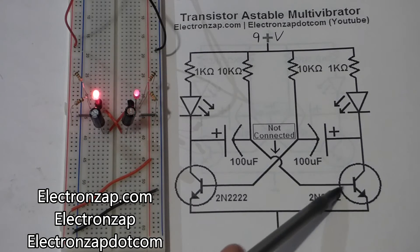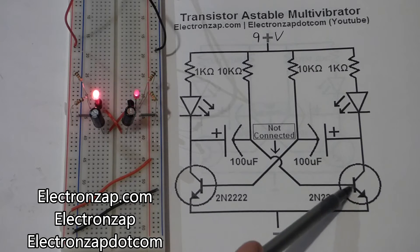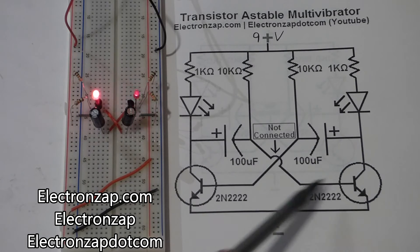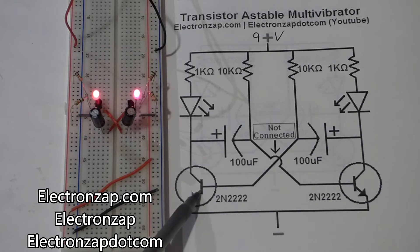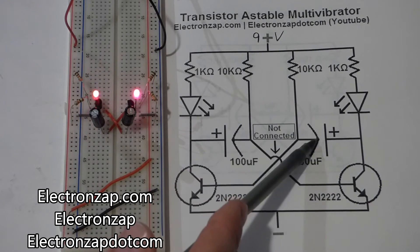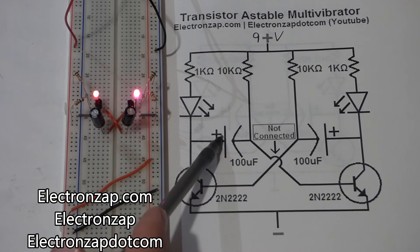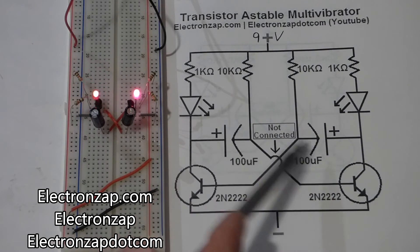And the transistors end up getting turned on and off. First one's on, the other one's off, and then the other one's on, and this one's off. And the way that is controlled is by these two capacitors, which one is charging, one is discharging, and that alternates.